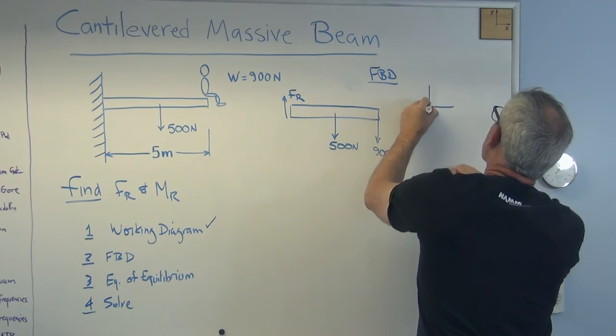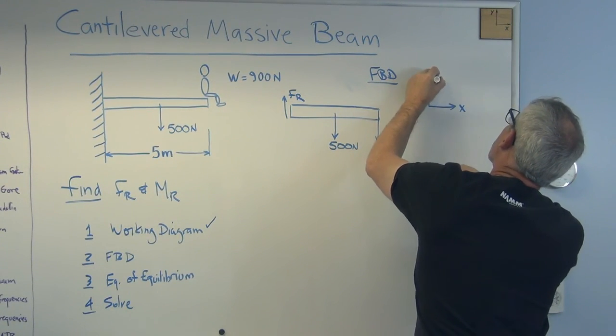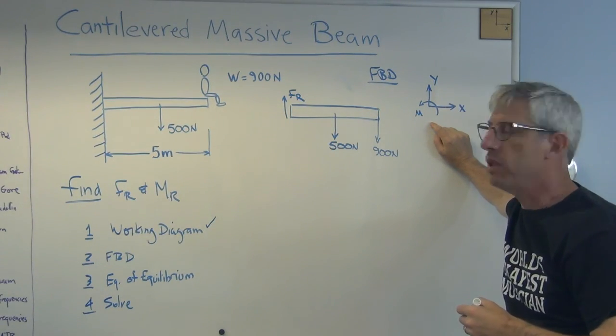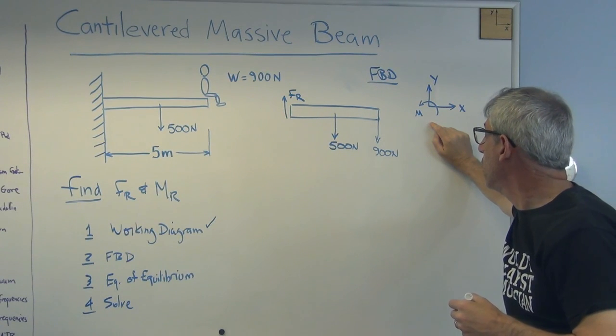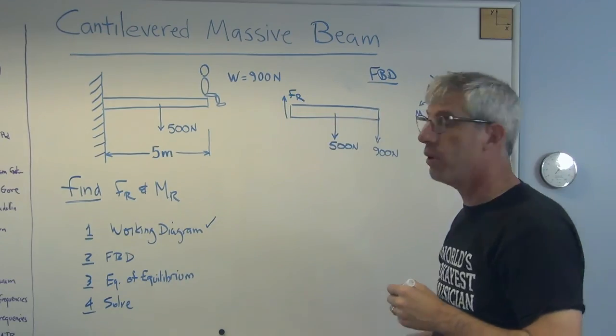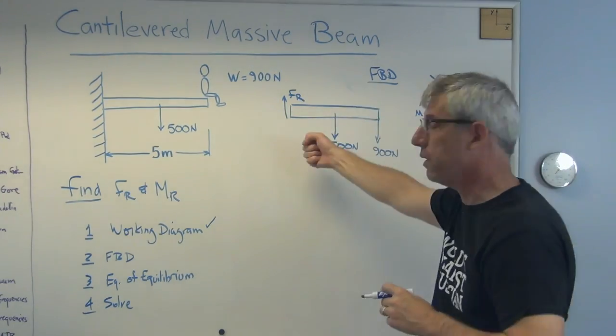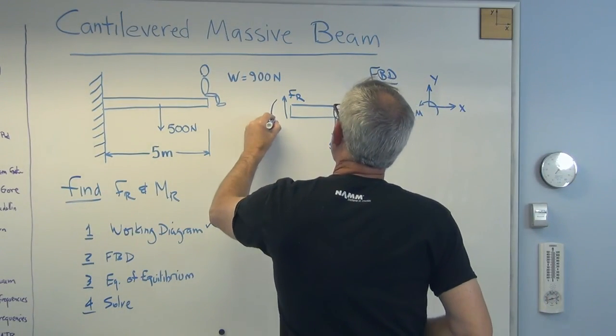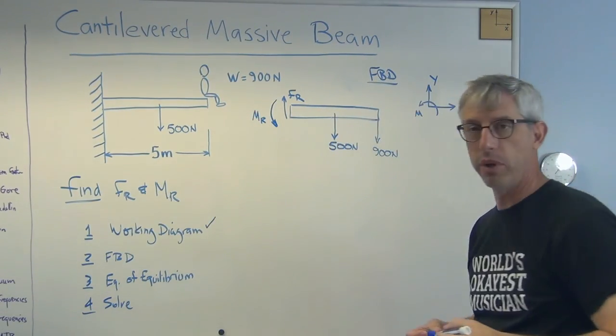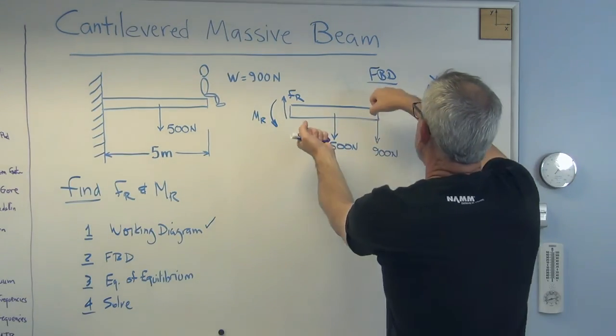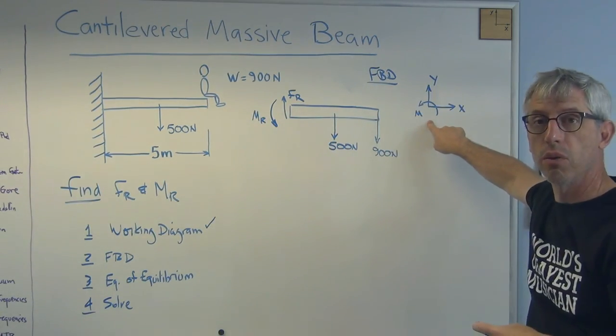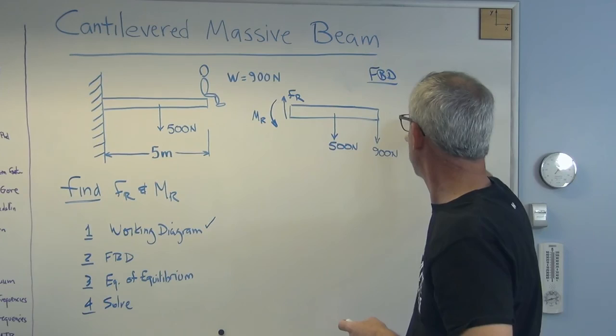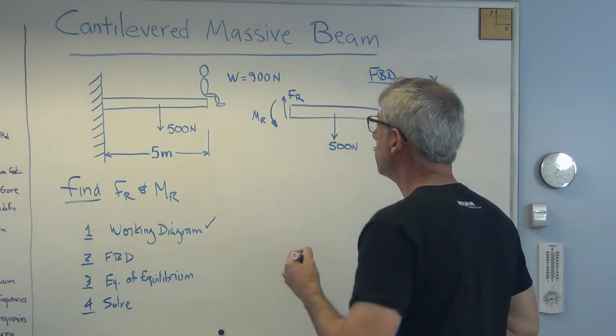But there also has to be a moment. Let's draw our axes over here. Can't do a problem unless you've got axes. I'll use those most of the time unless I have some good reason not to. So if there is a counteracting force, a reaction force, there has to be a reaction moment or else this thing is going to spin. We don't want that. We don't want to dump the professor off into whatever's below him.